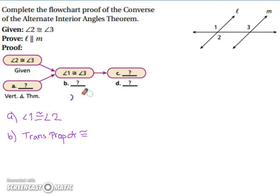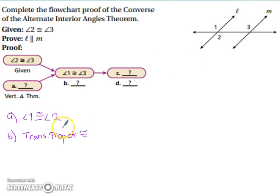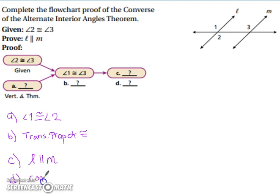Now that we have angle 1 is congruent to angle 3, they're corresponding angles. If they're congruent, these lines have to be parallel. So for C, line L is parallel to M, and the reason is the converse of the corresponding angles postulate.